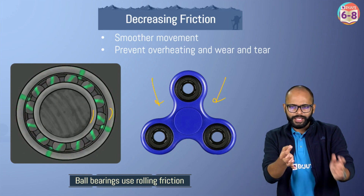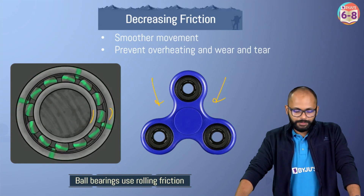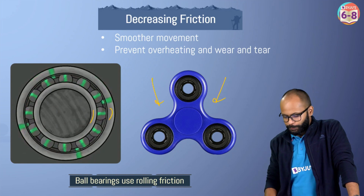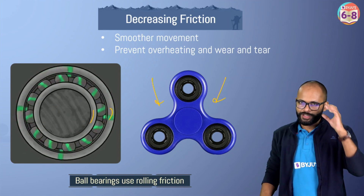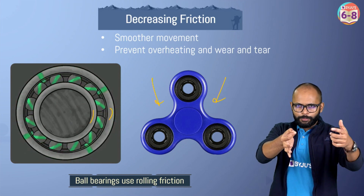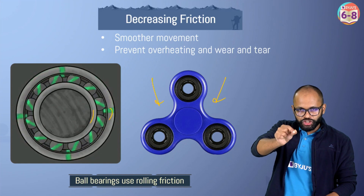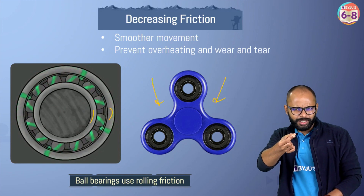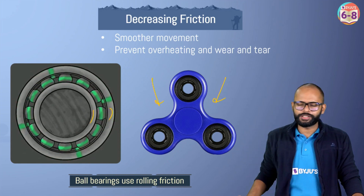Think about a fidget spinner - it spins so smoothly because of ball bearings. Now here's a question for you: when a fidget spinner is spinning and you try to change its orientation, it seems like something is resisting. What is that? Tell me in the comment section. If you don't know, ask your elder brother or sister. Think and try to answer.